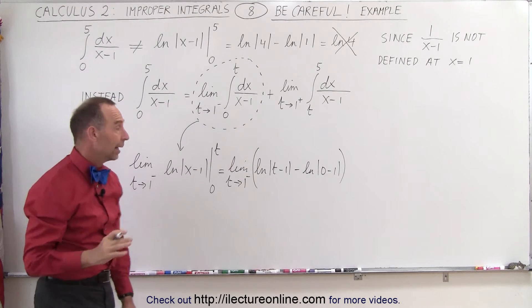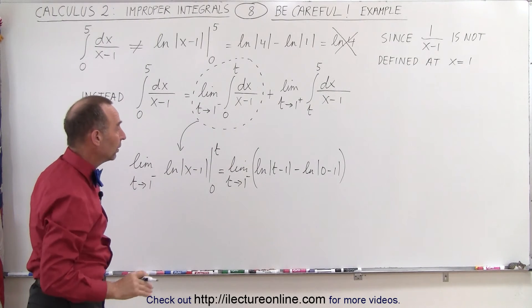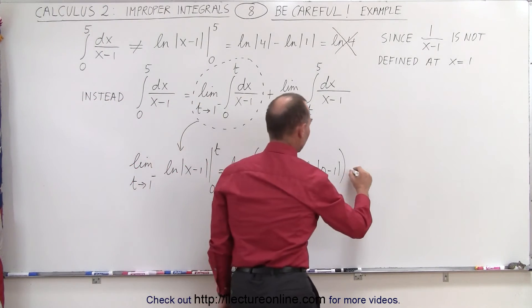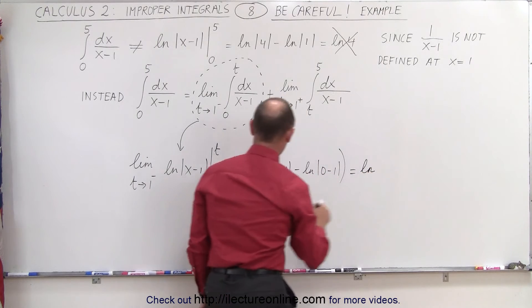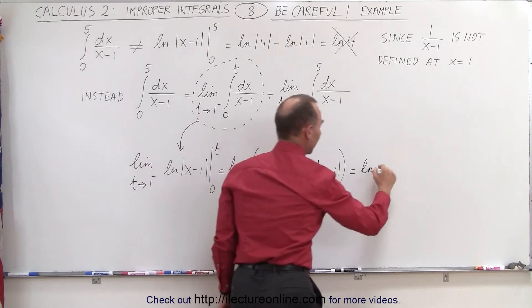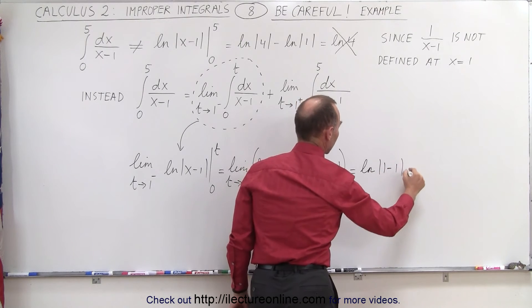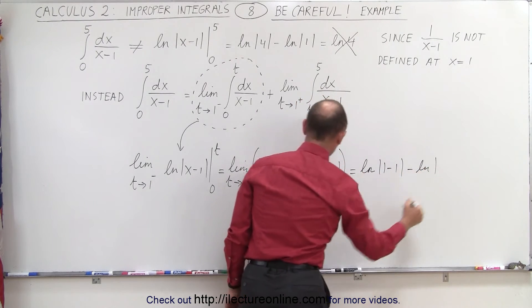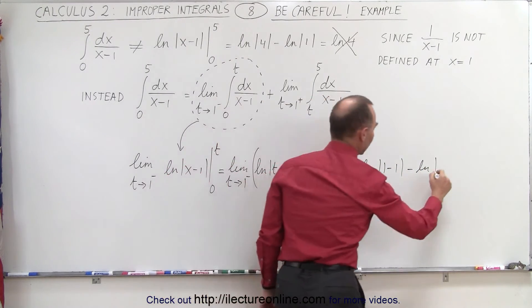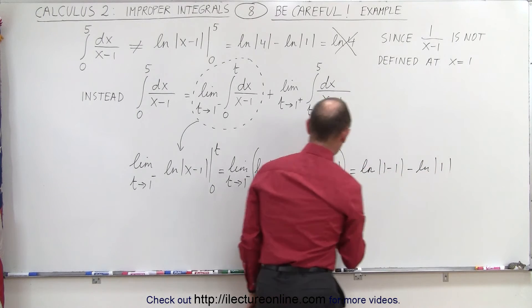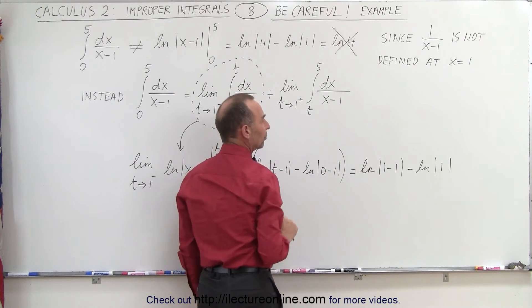And now we can go ahead and allow t to go to 1 so we can see what happens. So this is equal to the natural log of—when t goes to 1 we get the natural log of 1 minus 1 minus the natural log of 1, because the absolute value of negative 1 is equal to 1.